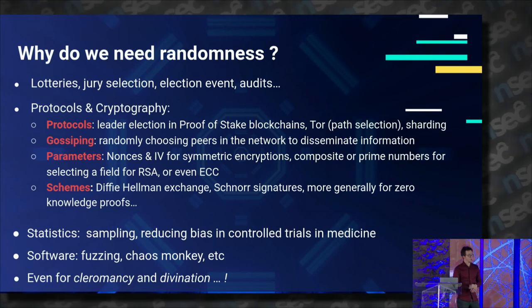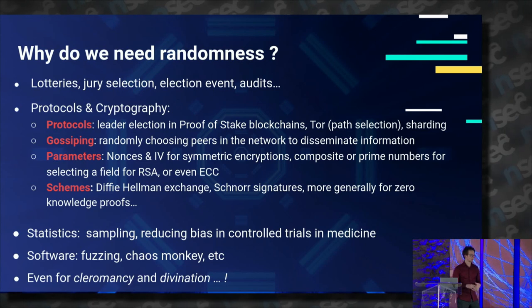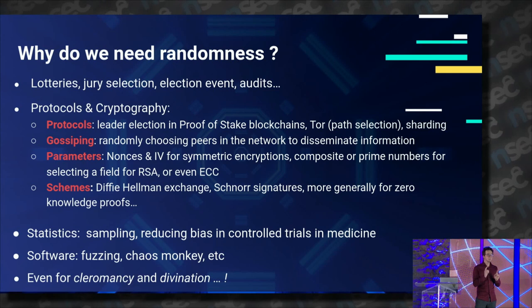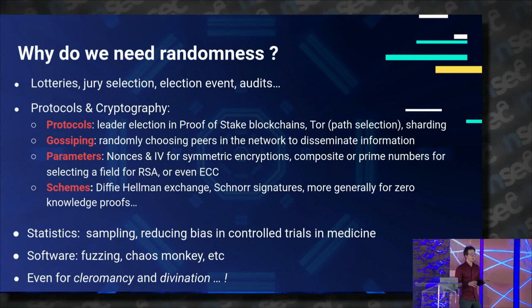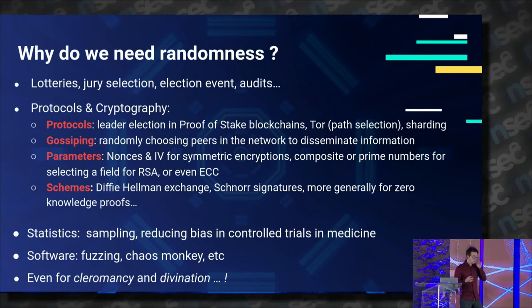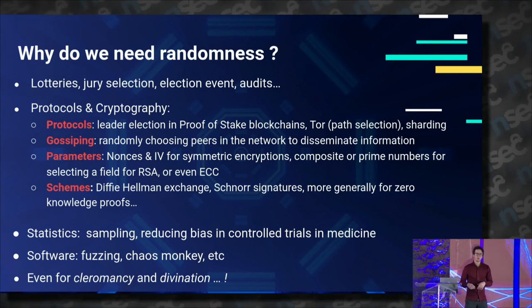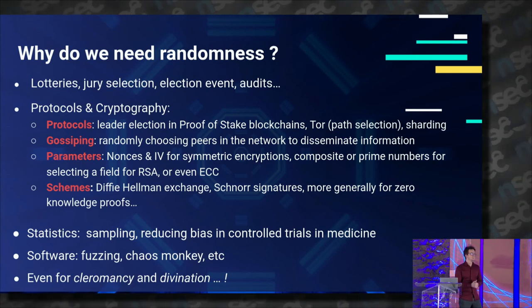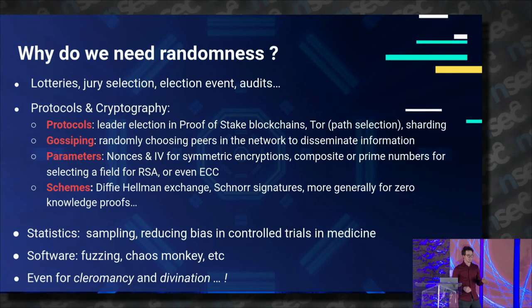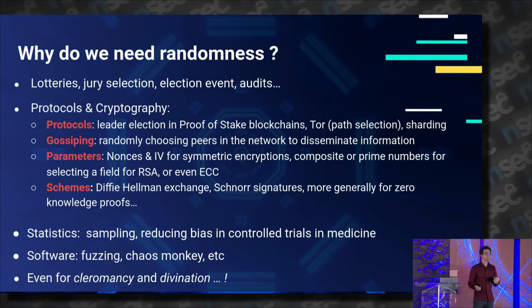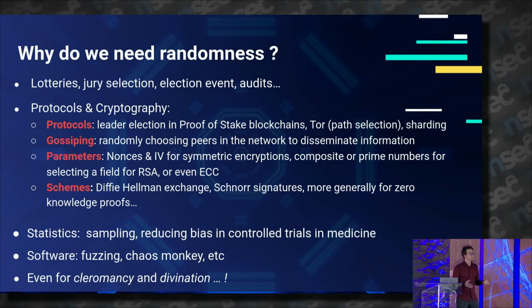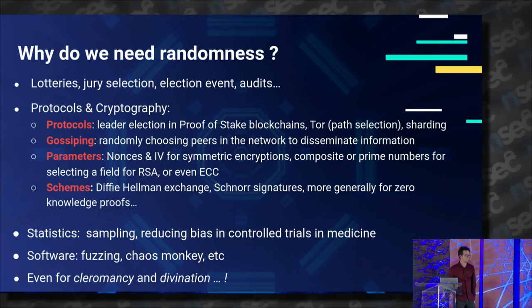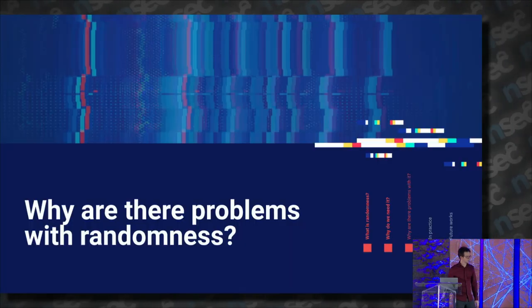And finally, we use randomness a lot in software in general. If you do fuzzing, chaos monkey, and so on, you also want random values. But these values can be generated by a PRNG — a pseudo-random number generator — seeded in a repeatable way. So it can be deterministic. It doesn't need to be secret or public, but it still needs to be uniformly distributed in the values you're interested in.